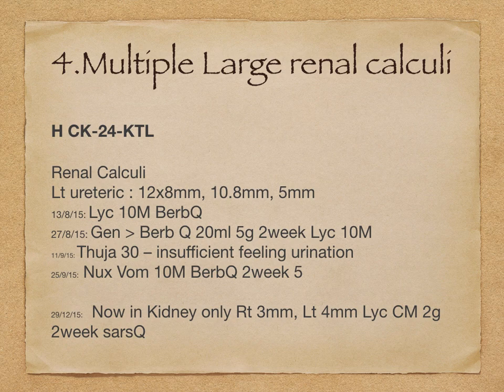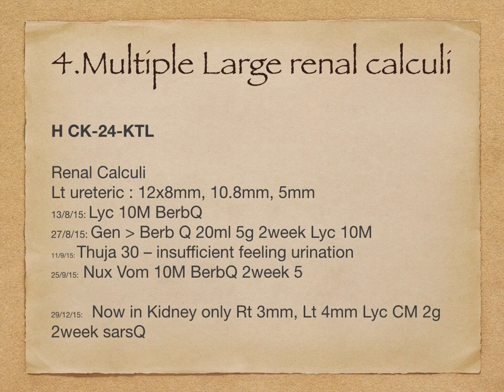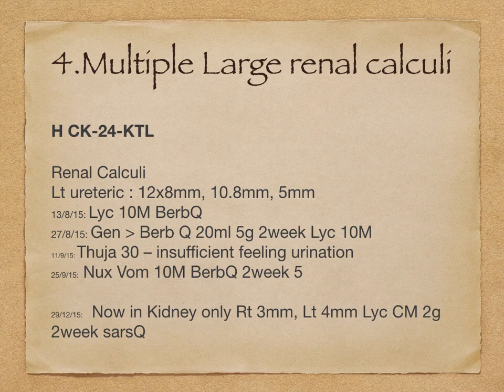One case of multiple large renal calcula — the age of the patient is only 24. Left ureteric calcula: 12x8 mm, then another one 10.8 mm, then 5 mm. Remember, below 8 mm this type of calcula is very easy to manage because the maximum dilatation of the ureter is only 8 mm. So above that, usually surgery is needed. But don't worry — homeopathic medicine can cure even large stones.